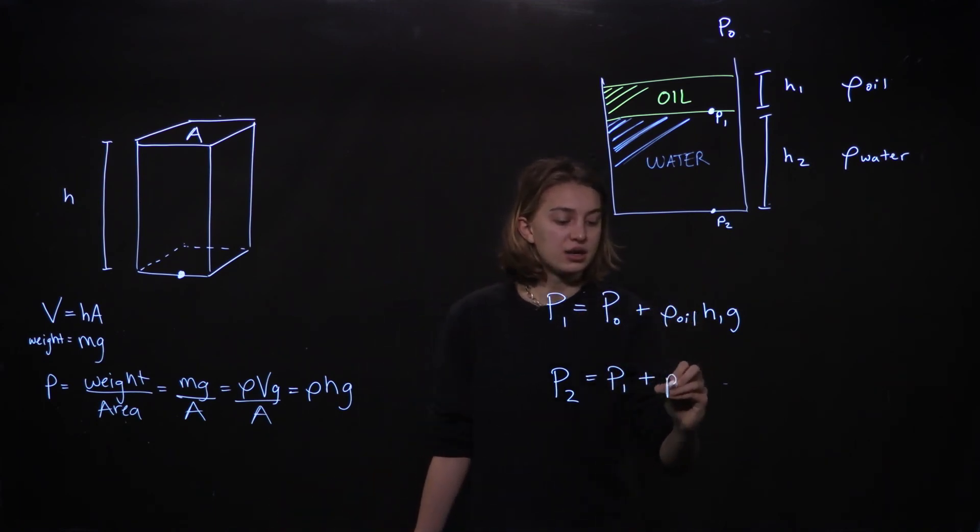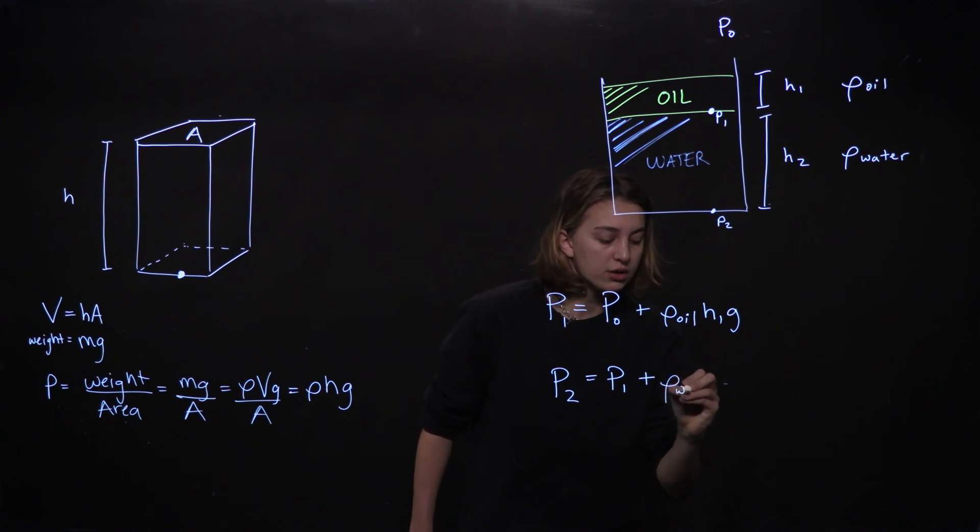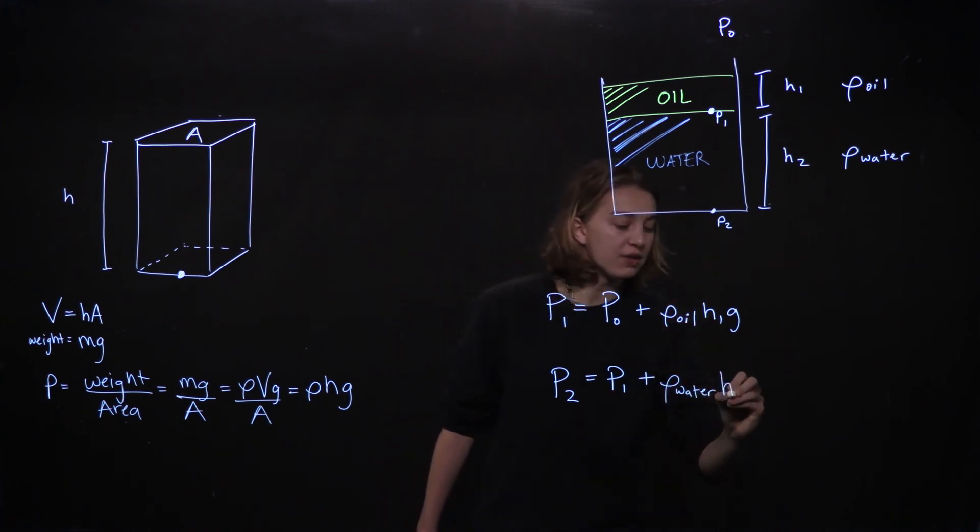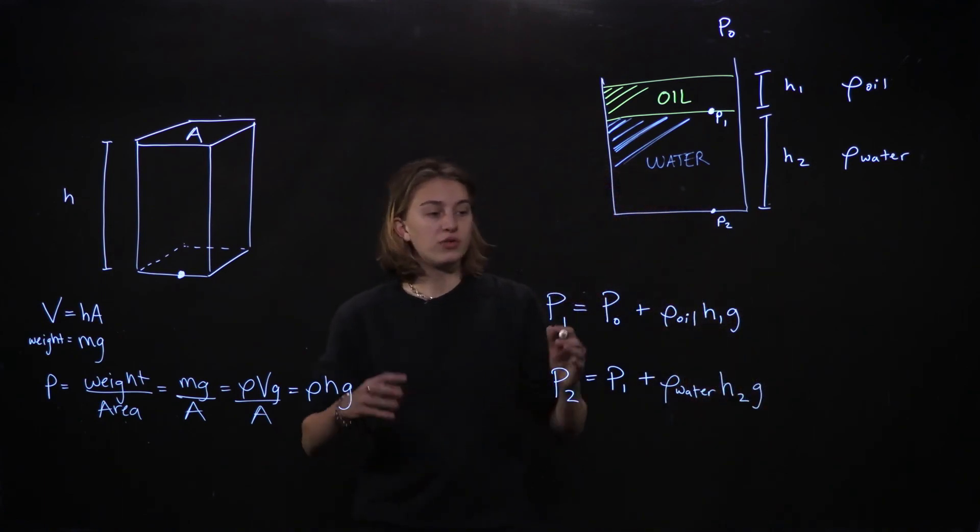And that is the, that doesn't look like a rho, rho water, as in the density of water, times the height of that column H2, times the same acceleration due to gravity. So if we were to solve this,